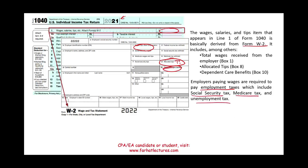Employers paying wages are required to pay employment taxes, which include Social Security, Medicare, and unemployment tax. From the company's perspective, they match your Social Security and Medicare contributions — you pay your share and they match it. They also pay unemployment tax, which can be both state and federal, though that is beyond the scope of the CPA or enrolled agent exam.